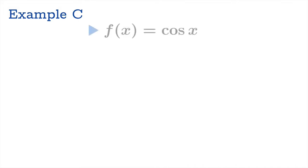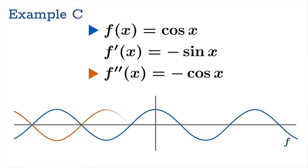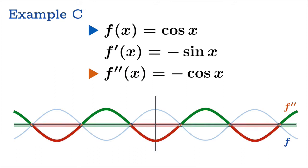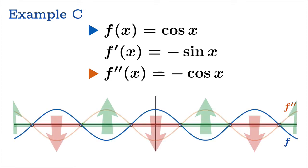Let's look at a concrete example. Suppose f(x) = cos(x). Then f′(x) = −sin(x) and f″(x) = −cos(x). Concentrating on the graph of −cos(x): it's zero at π/2 plus integer multiples of π. The intervals where f″ is positive are those where f is concave up, and the intervals where f″ is negative are those where f is concave down — and if you look at the original graph of cosine, this matches exactly.